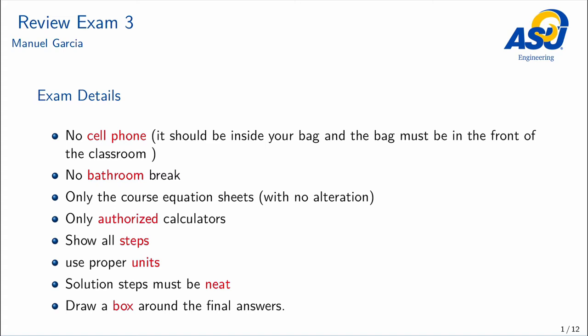This is the thermodynamics review for Exam 3. Please remember that cell phones are not allowed; if you have one, it should be in the back with the screen facing the front of the classroom. No bathroom breaks. Only the course equation sheets without alteration will be provided. Only authorized calculators are permitted. Show all steps with proper units — solution steps must be neat, and the final answer alone will not suffice for full credit. Draw a box around your final answers.